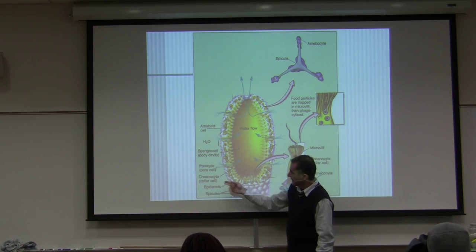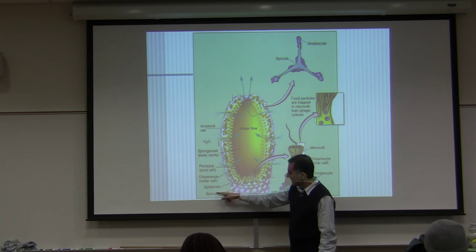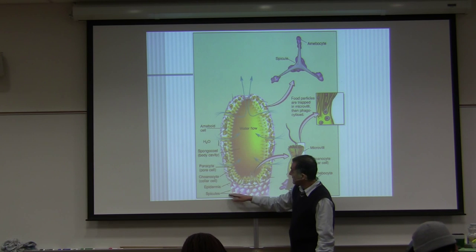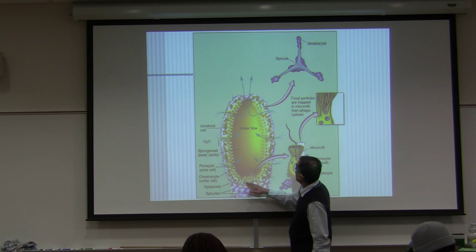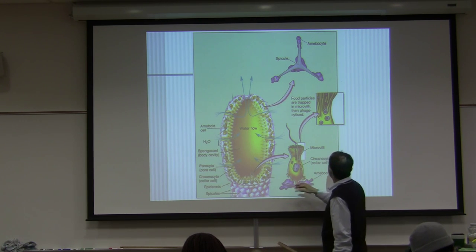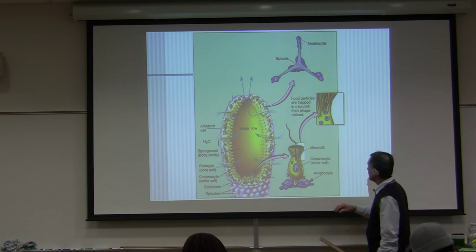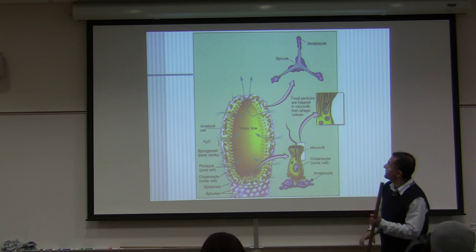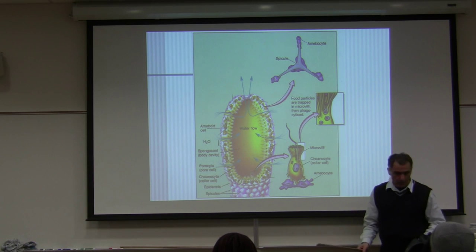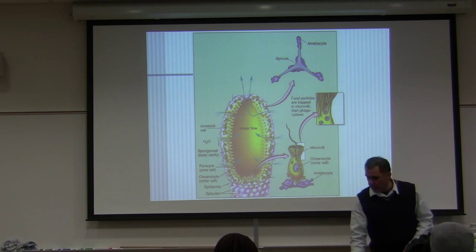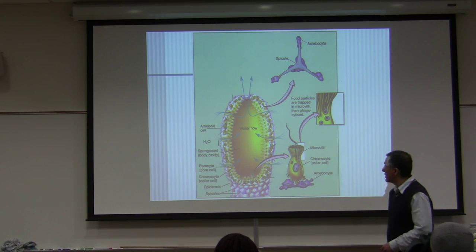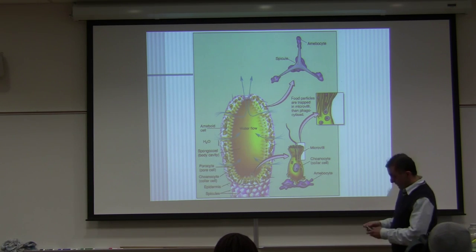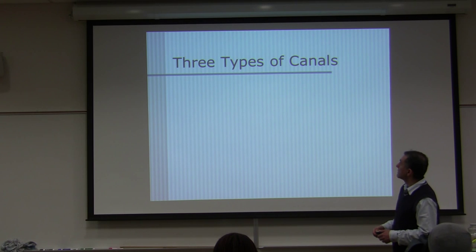You also have coanocytes, or collar cells, and epidermis — pinacocytes. That's the general picture of sponges.